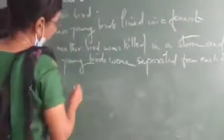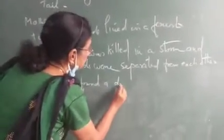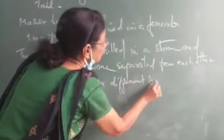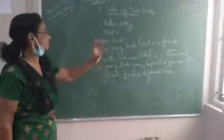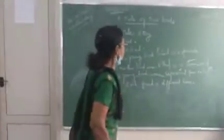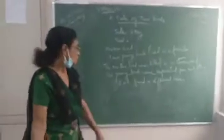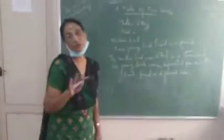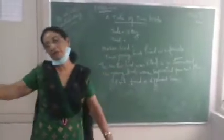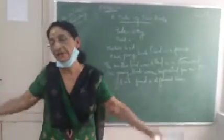Each found a different home. These are the main things. There was a mother bird with two young ones who lived in a forest. The mother bird was killed in a storm and the young birds were separated, so each found a different home. One had gone to one home and the other had gone to another home. They went in different ways.